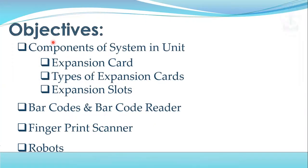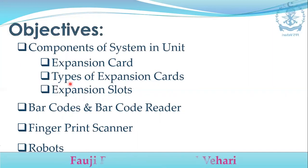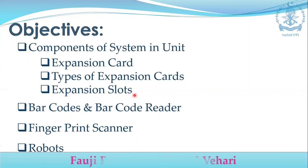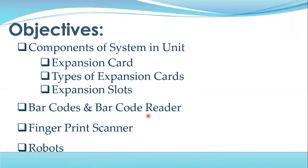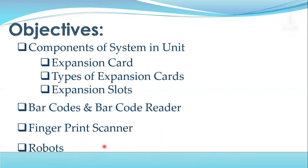So, what are the objectives of today's lecture? Components of system unit, expansion cards, types of expansion cards and expansion slots. Barcodes and barcode readers, fingerprint scanner and robots. We will discuss these things in today's lecture briefly.